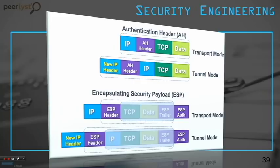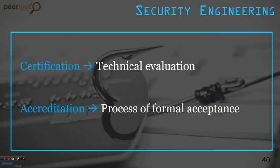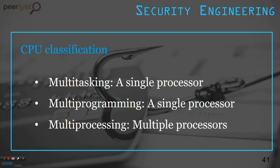Two other concepts that may come up in the exam are certification and accreditation. Certification is a technical evaluation of a solution. Accreditation is the final formal acceptance of the solution by management. They come in that order and are done by different types of teams: first certification (technical evaluation), then accreditation (process of formal acceptance).